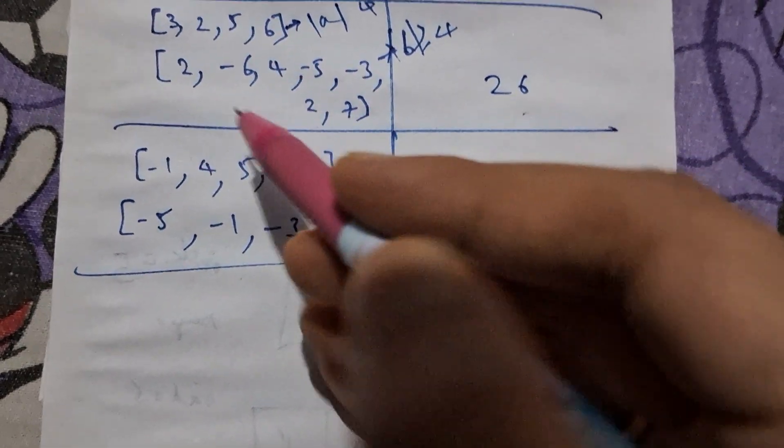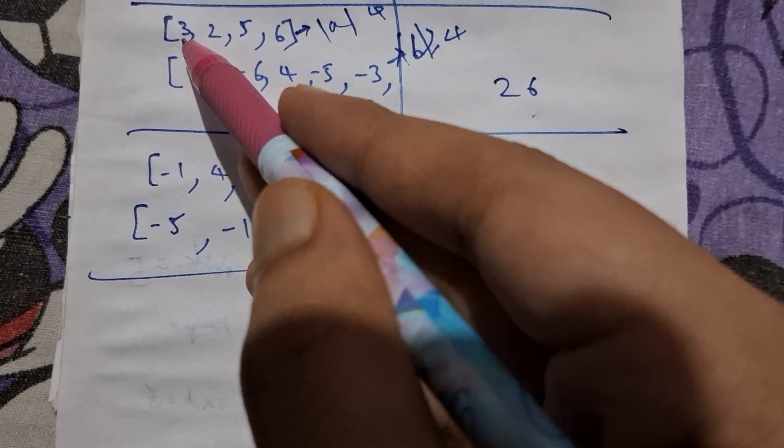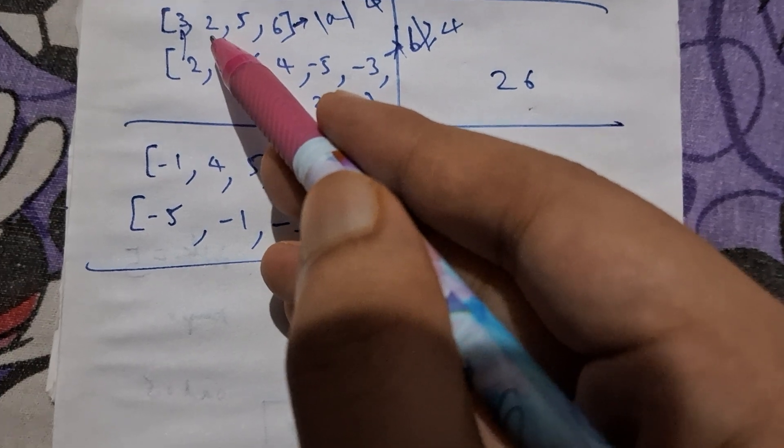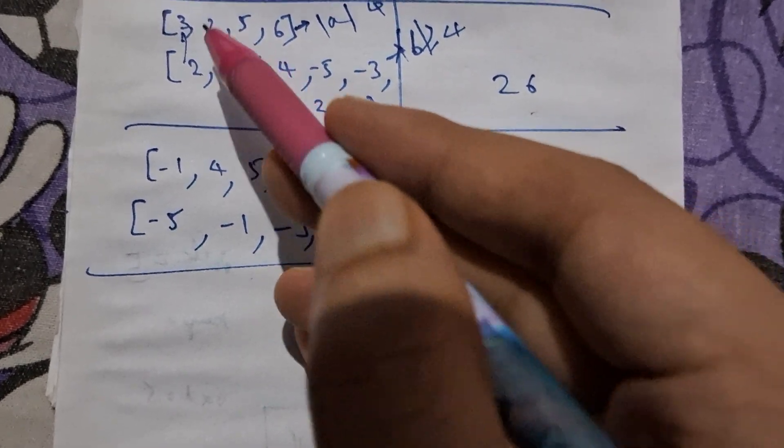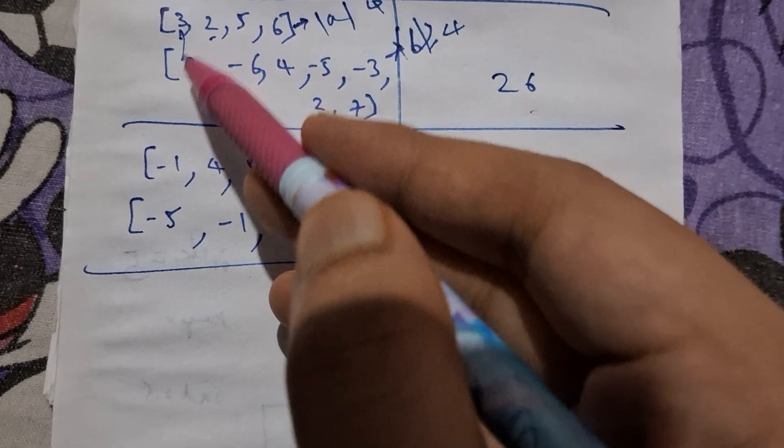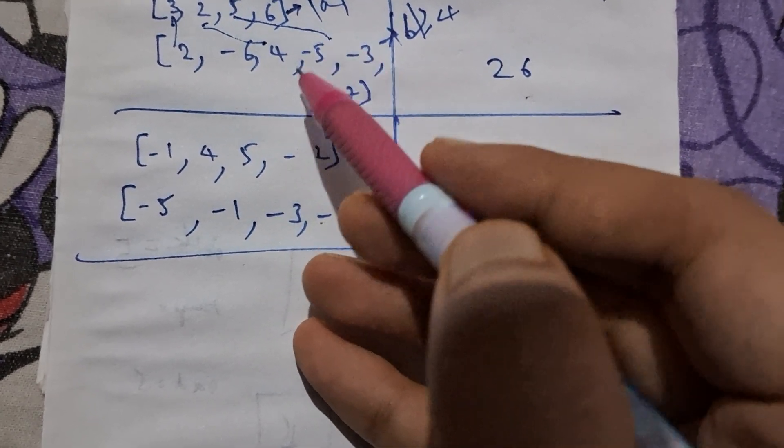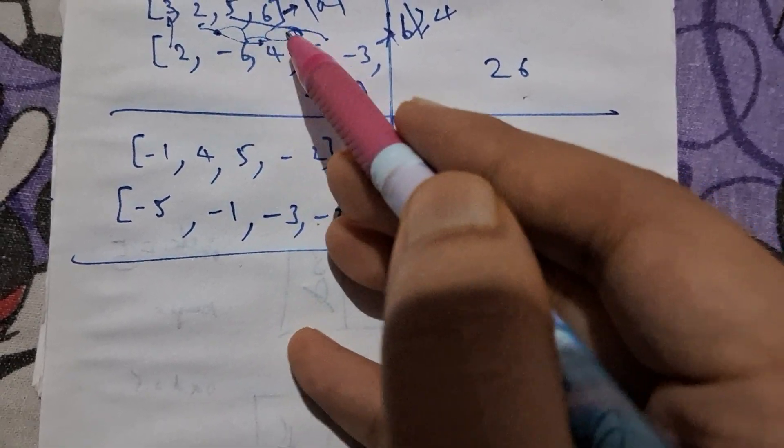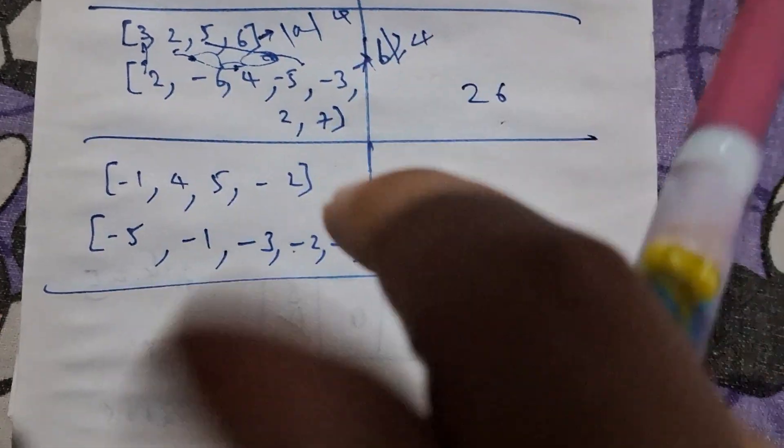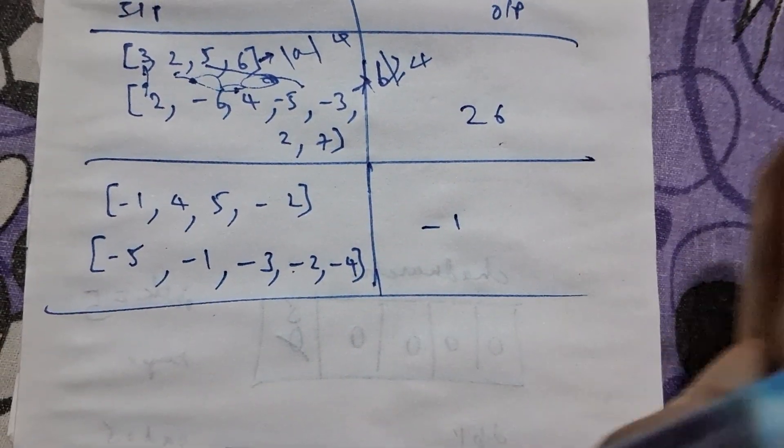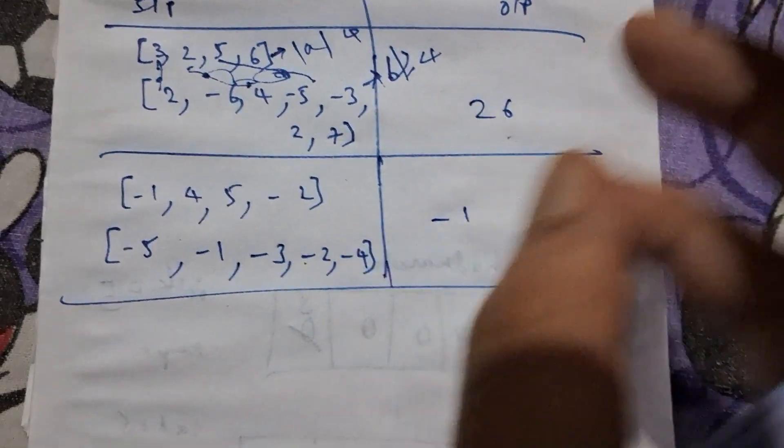What you can do is you can sequentially take elements from array A and B. Sequentially means if we are taking this element, this 2, and pairing it with some other element, it will be after this 2. If we are taking this 5, it will be something after this. You have to take it sequentially and maximize the sum of the product of those pairs.